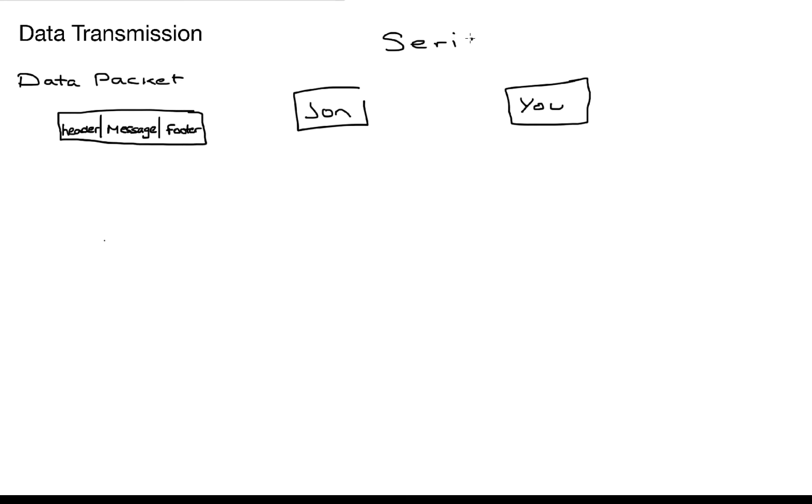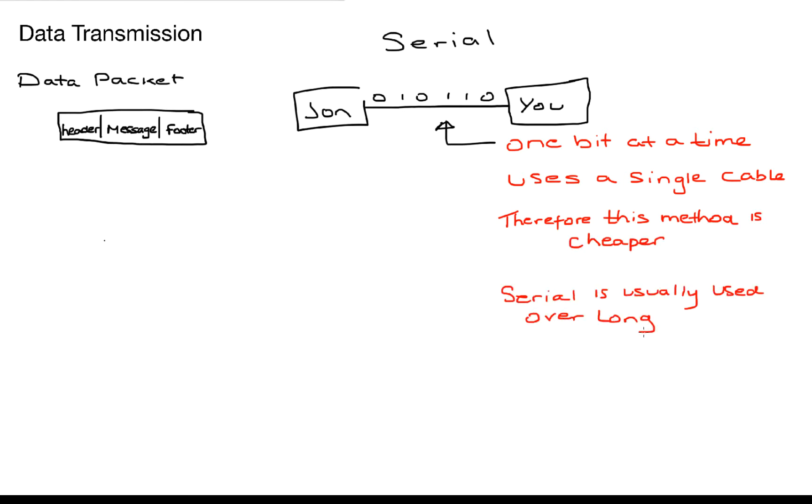Now there's two types of data transmission we need to be aware of for our exam and those are serial and parallel transmissions. In a serial transmission all of our data is sent one bit at a time. It uses a single cable and therefore this method is cheaper because we're only using one piece of copper in order to send our data. Serial transmission is usually used over long distances because the signal tends to be stronger.